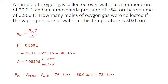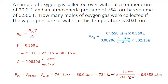Pressure must be in units of atmospheres for the ideal gas law, so we convert using the factor 1 atmosphere equals 760 torr. The units of torr cancel, giving us 0.9658 atmospheres, which we substitute into our ideal gas law. Our units cancel, leaving us with simply moles, and the moles of oxygen gas produced in this reaction are 0.0218 moles.